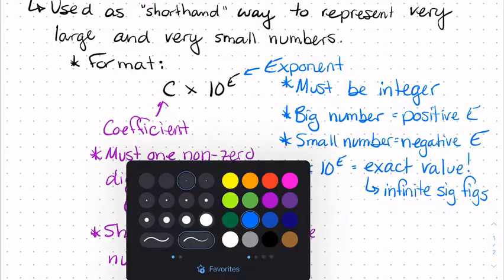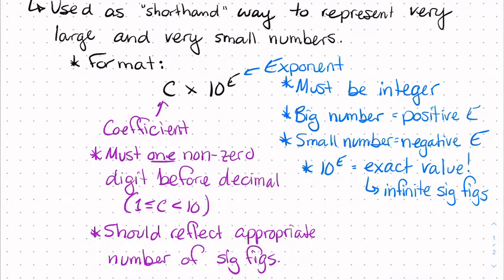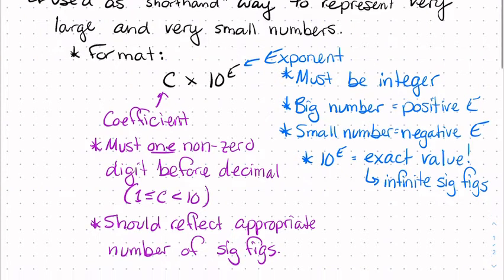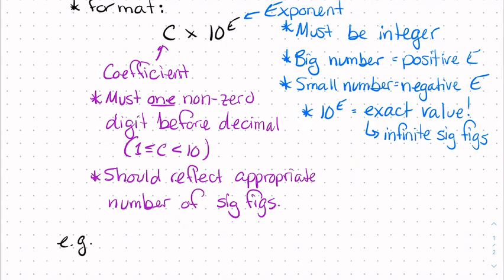You will want to get comfortable converting numbers in and out of scientific notation. For example, if we wanted to take a really big number and convert that into scientific notation. The way I essentially think about this is we know that we want one non-zero digit before our decimal, so our decimal point is going to end up between the 2 and the 6.